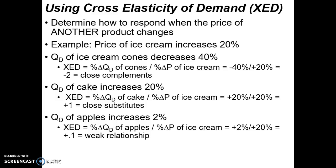At the same time, the quantity demanded for cake increased 20%. So as the price of ice cream increases 20%, the quantity demanded of cake also increases 20%. Plugging those values in — percent change in quantity demanded of cake over percent change in price of ice cream — we get plus 20 over plus 20, a value of positive 1. The positive value means they're substitutes, and since that value is pretty far from zero, they are close substitutes.